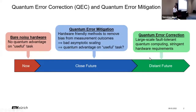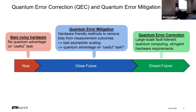Before I start talking about the topic, I'd like to talk a little bit about the terms error mitigation and error correction — what they mean and how they differ from each other. For this purpose I drew a very crude timeline of quantum computing. As you can see on the left side, we already have quantum computers nowadays, but they're unfortunately very noisy, which makes it extremely difficult to demonstrate any kind of quantum advantage on a useful task.